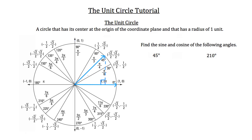I also know that this side — the hypotenuse of this right triangle — has a value of 1, because the radius of the unit circle is 1. That's the distance from the center to the outside edge of the circle. I also know that this is a 45-degree angle. Remember what you know about special right triangles.